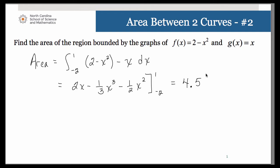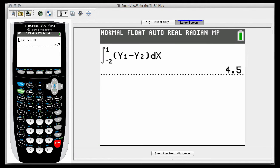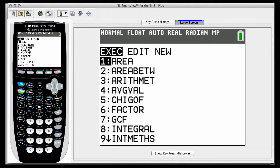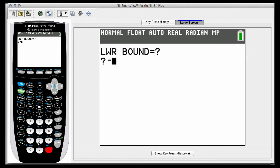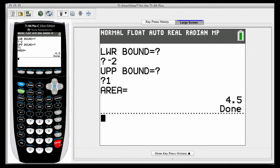So once again, we could check that by using that area between program. So let's give that a try. So our lower boundary in this case is negative 2, upper boundary is 1, and voila, there's the answer.